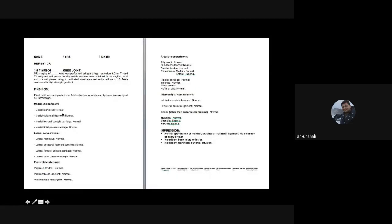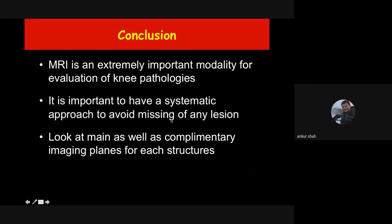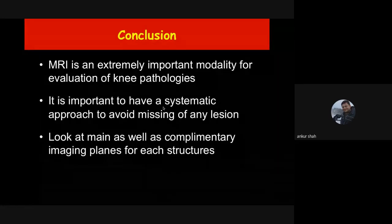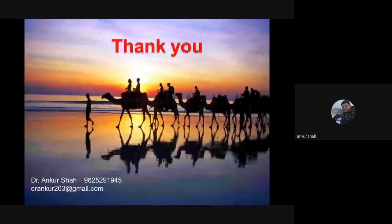In summary, follow a proper protocol to look at each and every structure so you don't miss any pathology. It is very much important to have a systematic approach to avoid missing any lesion. Always keep in mind the normal variants and mimics of tears so that you don't misdiagnose a normal structure as a tear. Thank you.